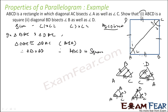One part is done. Second part: diagonal BD bisects angle B as well as angle D. Since ABCD is a square, you can state by theorem that diagonal BD will bisect angle B as well as angle D. Or you can draw diagonal BD and prove the two triangles congruent by SSS rule — all sides are equal and the common side is the same — then the angles will be equal.